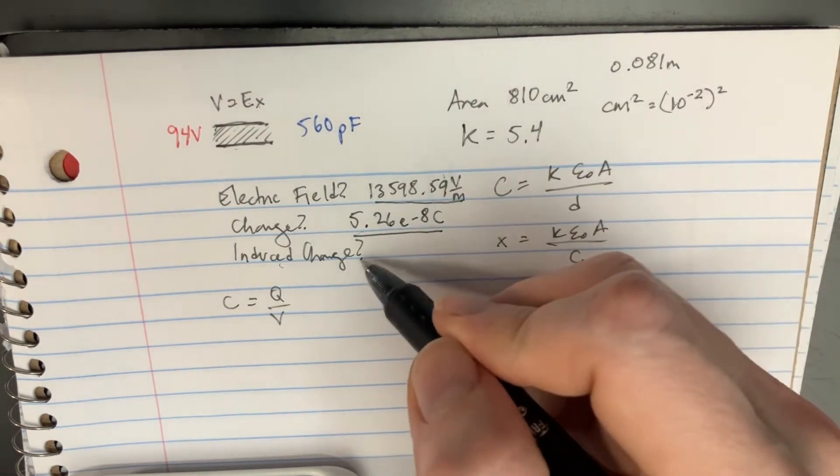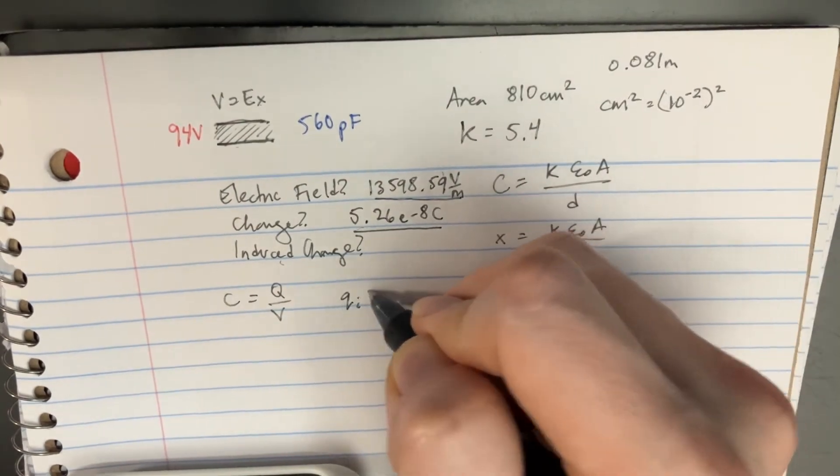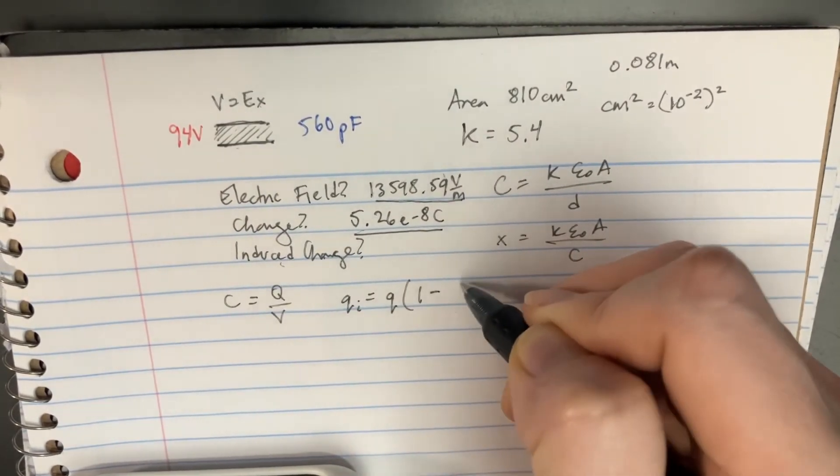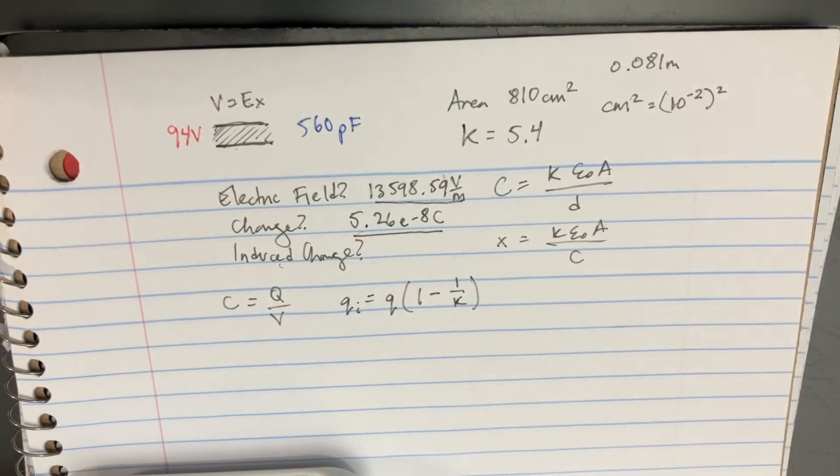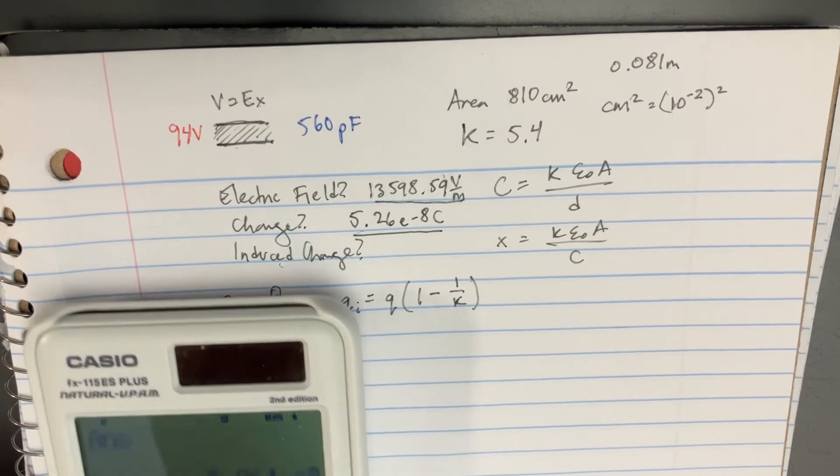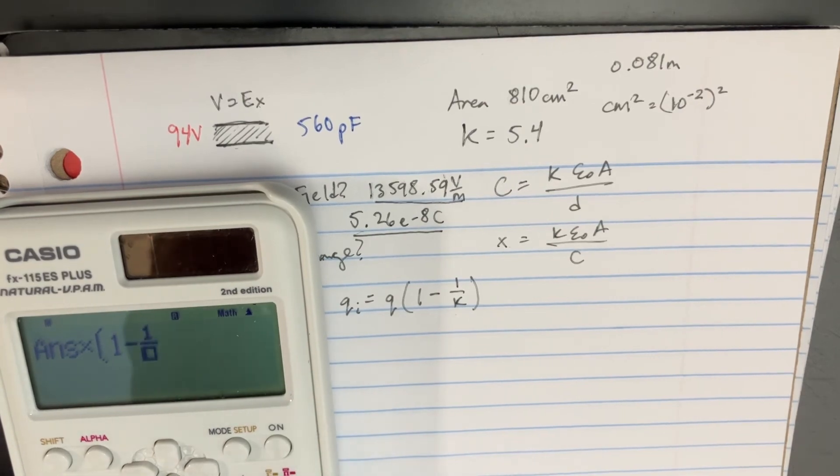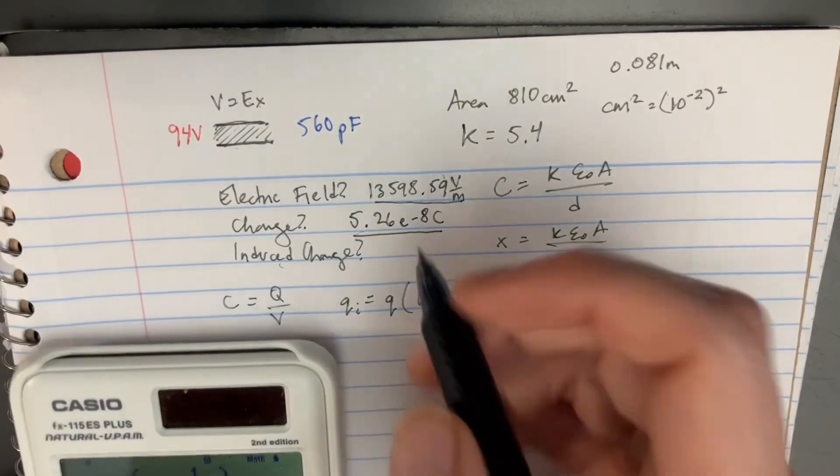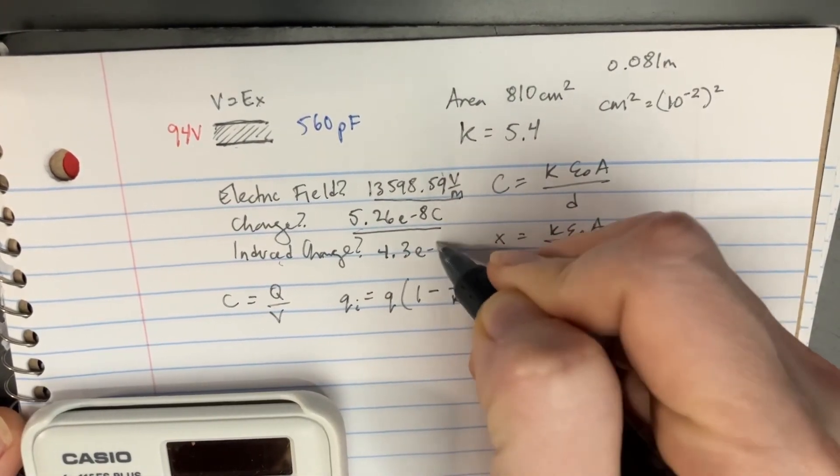For the induced charge, we have this equation: the induced charge equals Q times 1 minus 1 over K. We can use that, so the charge times 1 minus 1 over 5.4 gives us the induced charge of 4.3 times 10 to the negative 8.